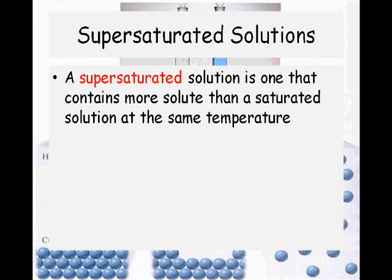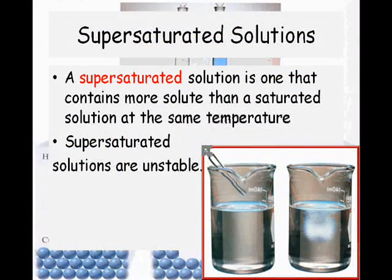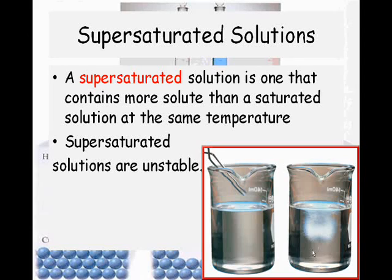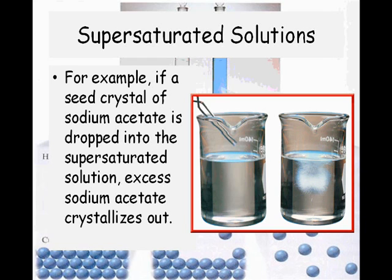A supersaturated solution is one that contains more solute than it can actually dissolve, and supersaturated solutions are unstable. As you can see in the picture, once a seed crystal is added to a supersaturated solution, the solution starts to crystallize. They're using sodium acetate here — if a seed crystal exceeds the amount that can be dissolved, it starts to crystallize out.